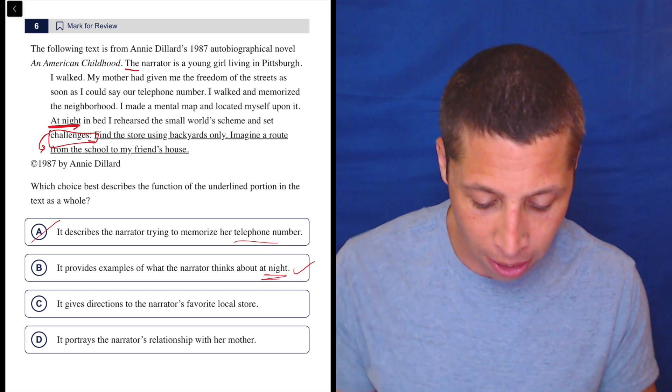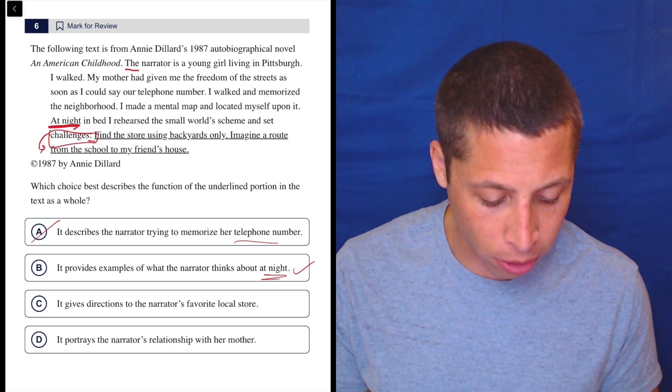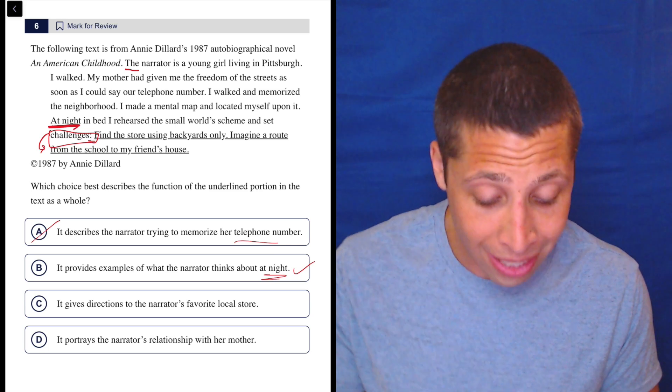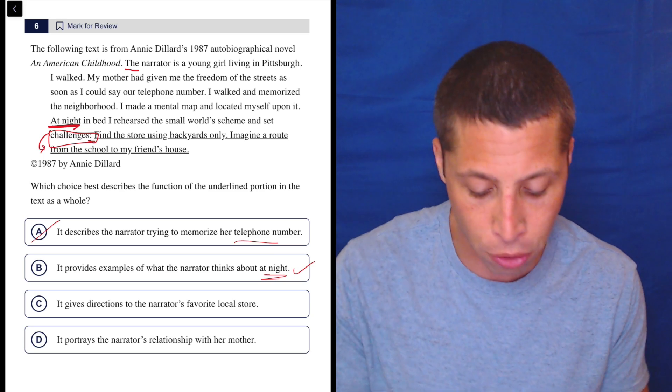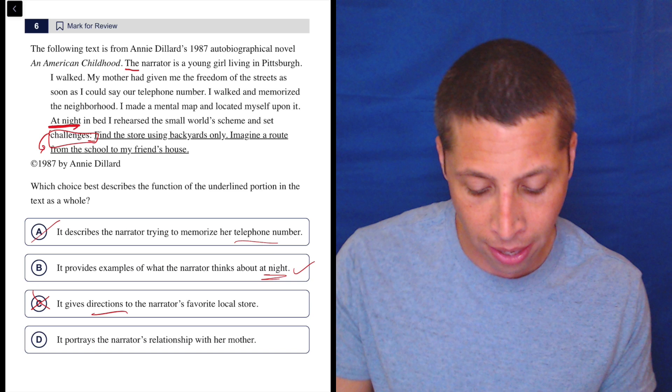Choice C: It gives directions to the narrator's favorite local store. No, it does not. It imagines her going to find these kinds of routes, but it doesn't have the directions. So it does not do that.